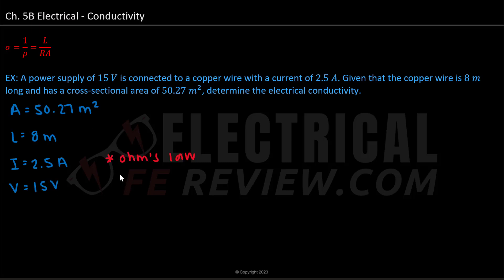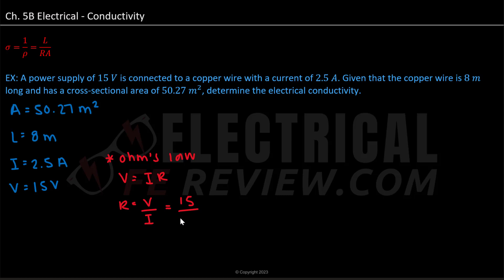We can recall using Ohm's law: voltage is equal to current multiplied by resistance. We can rearrange this formula to solve for resistance: resistance is equal to voltage divided by current. Plugging in our values, we have 15 volts divided by 2.5 amps, which gives us 6 ohms as our resistance.